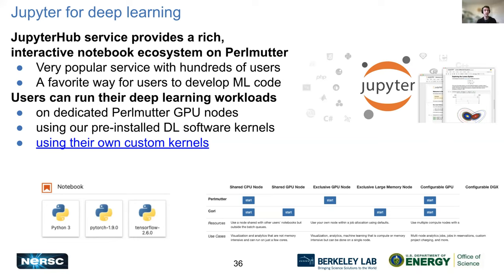Jupyter is an excellent service for deep learning, especially for interactive work. These notebooks are a very popular service with hundreds of our users and a favorite way for people to develop machine learning code in particular. It's personally great for interactive things like debugging, analysis, quick testing of custom operations for your architecture, and visualizing intermediate results. Our Jupyter environment is very flexible and easy to use — you can run workloads on dedicated Perlmutter GPU nodes. We have pre-installed deep learning software kernels based on our module installations for PyTorch or TensorFlow, and you can also use your own custom kernel — quite easy to set up with documentation available.